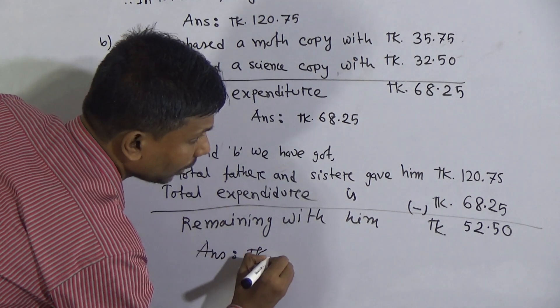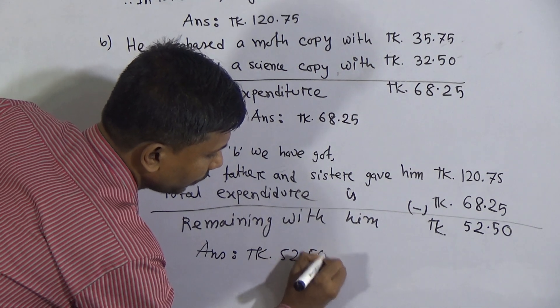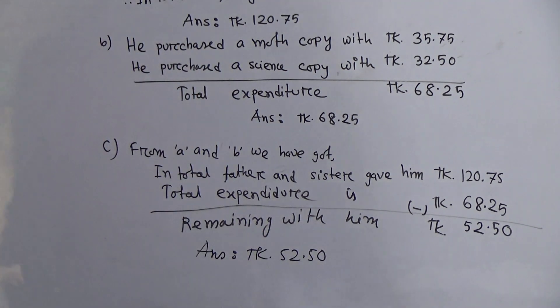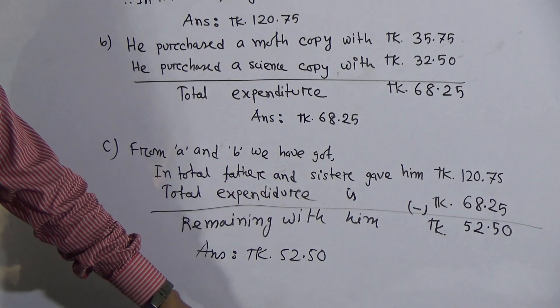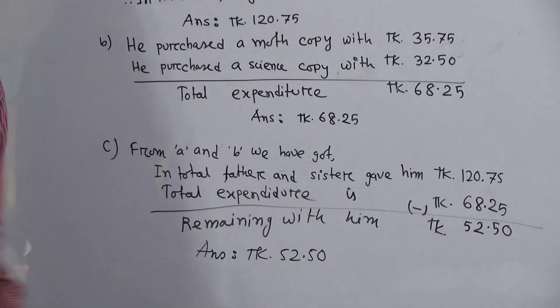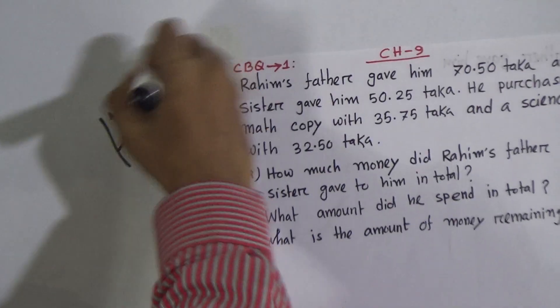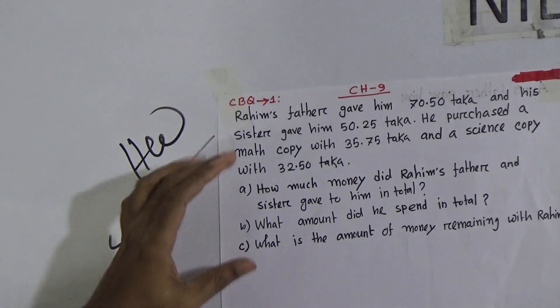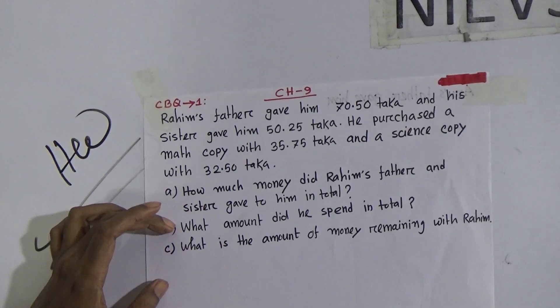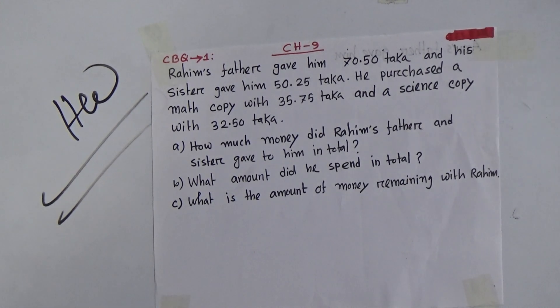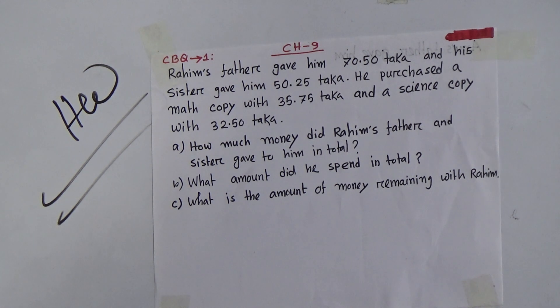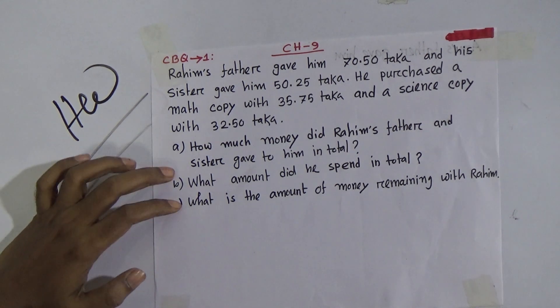Answer: remaining taka 52.50. Students, I hope you understood this math. Now I will talk about homework. Look students, you see the question CBQ 1 chapter 9. You see this question is your homework. I have done this in today's lecture. At first you have to try to understand this solution, then you do this homework.